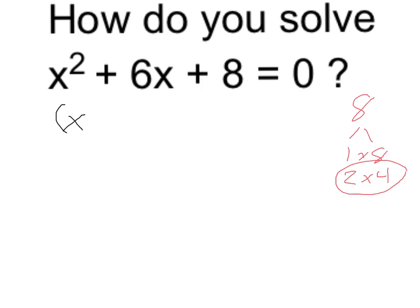x plus 4 times x plus 2, and that's all equal to 0. All I'm doing here is rewriting this. This and this mean exactly the same thing.